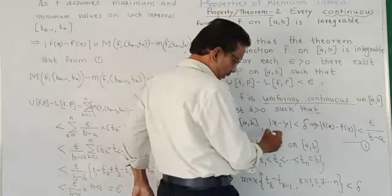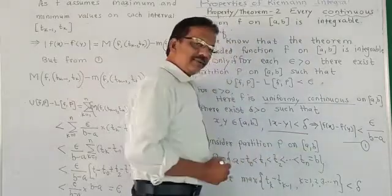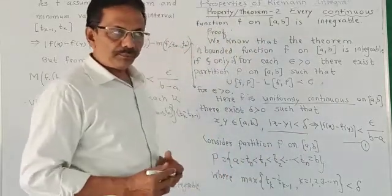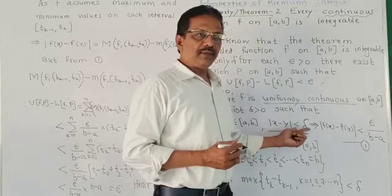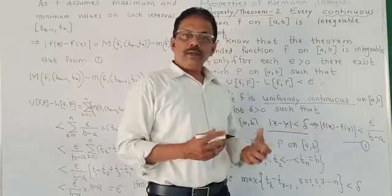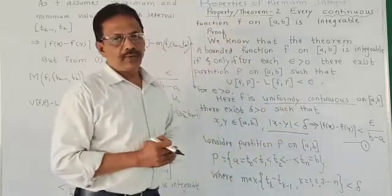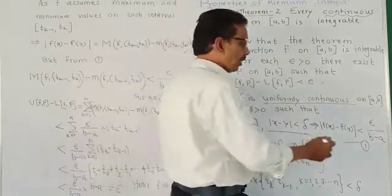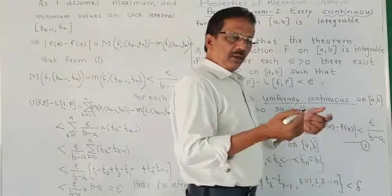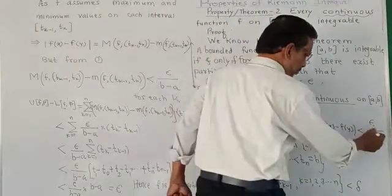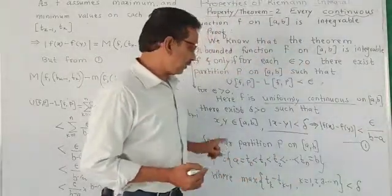Then, |x - y| less than delta means whenever the modulus value of |x - y| less than delta, then |f(x) - f(y)| is less than epsilon/(b - a). Of course, it is less than epsilon, but for our convenience, we write here epsilon/(b - a) and label this equation as 1.